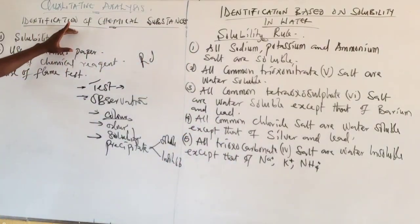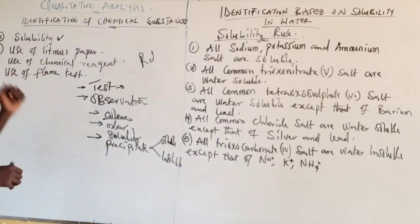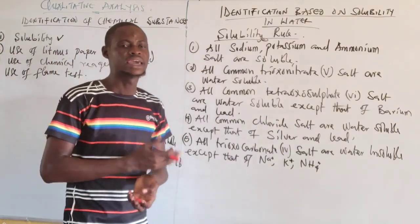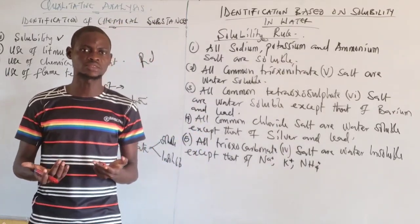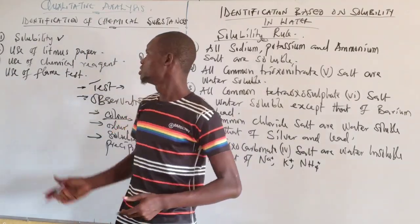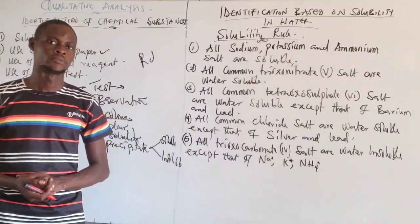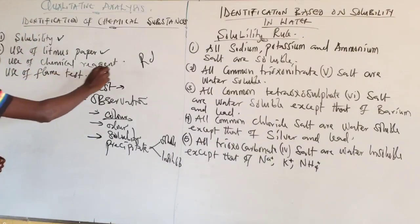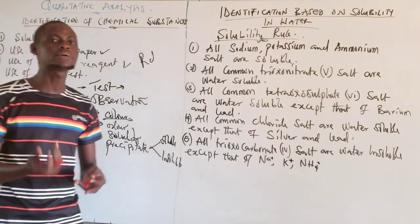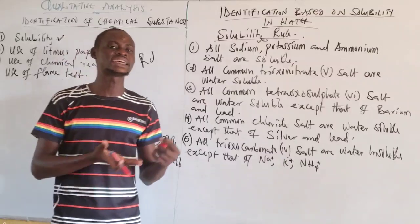Today I'm going to take you through four ways of identifying chemical substances. The first is identification based on solubility — checking if the substance is soluble in water. The second is based on color change in litmus paper. The third is based on addition of a chemical reagent such as sodium hydroxide, HCl, H₂SO₄, or barium chloride.